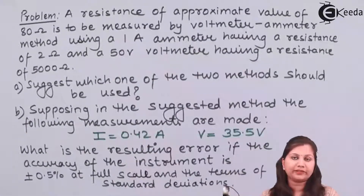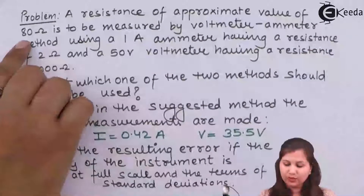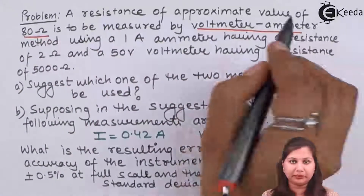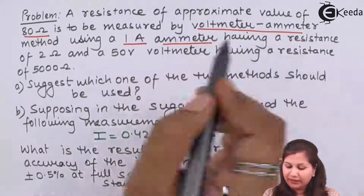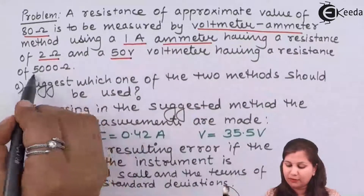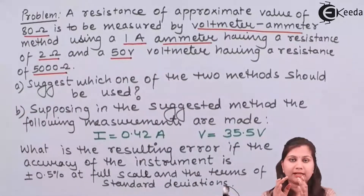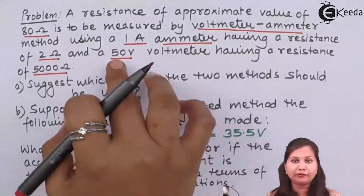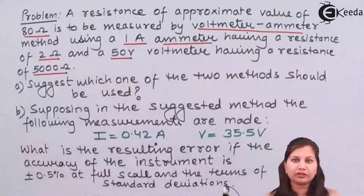Our problem is that a resistance is measured by using the ammeter-voltmeter method, and the resistance value is given to us as 80 ohms. This is the true value of the resistance. The ammeter used in this method is a 1 ampere ammeter having a resistance value of 2 ohms, and a voltmeter which is the 50 volts voltmeter having a resistance of 5000 ohms. The ammeter can give a maximum reading of 1 ampere and the voltmeter can give a maximum voltage of 50 volts.